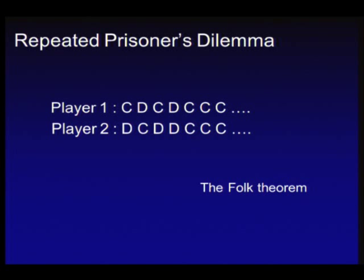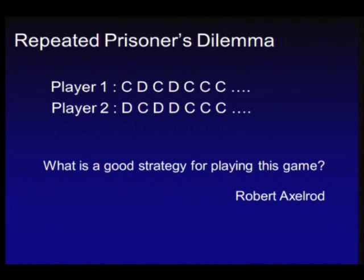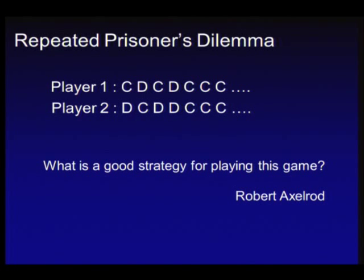More precisely, the folk theorem works as follows. If I adopt a trigger strategy — I cooperate with you as long as you cooperate with me, and as soon as you defect once I will defect forever — and if you know I play such a strategy, the rational thing for you is to cooperate. Robert Axelrod, a political scientist at Ann Arbor, asked: how do you play the repeated prisoner's dilemma? He invited people to submit computer programs. In the first tournament he got 14 entries.